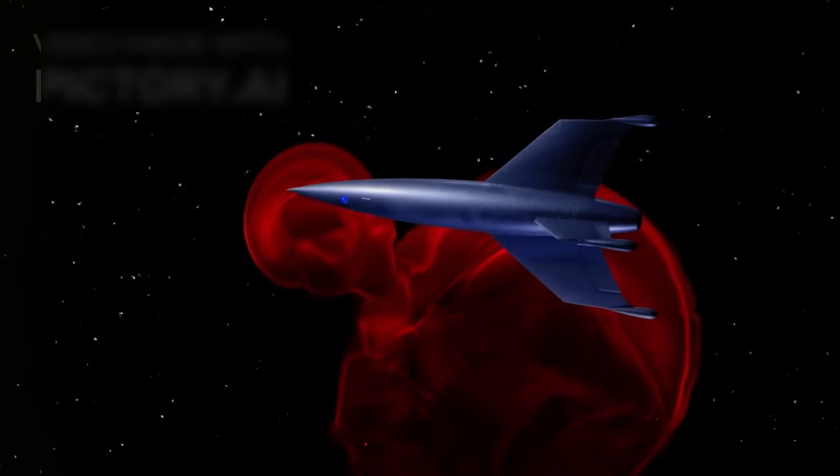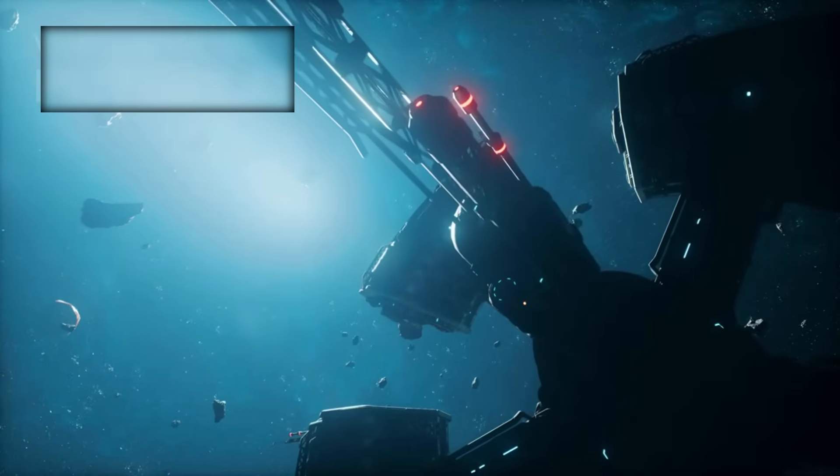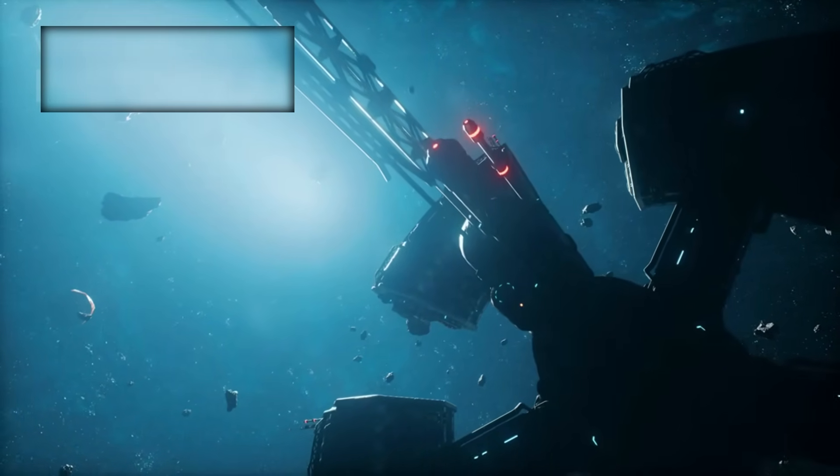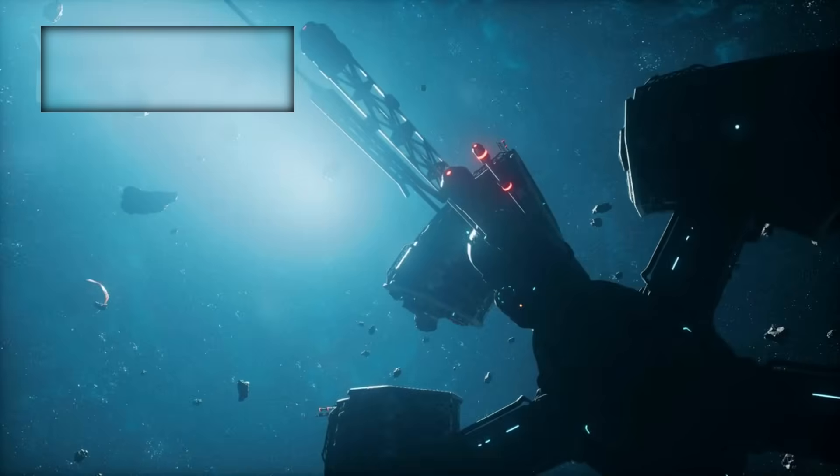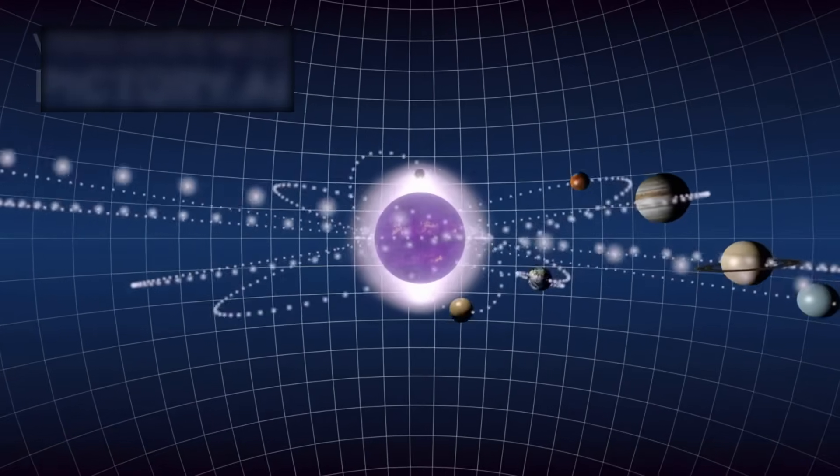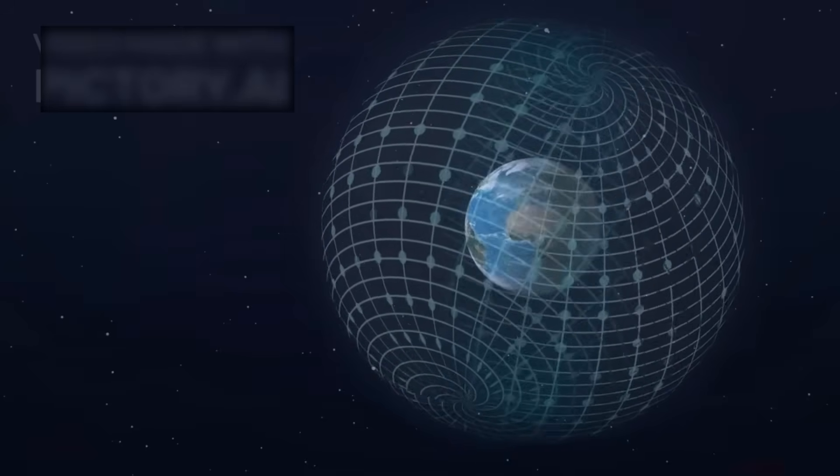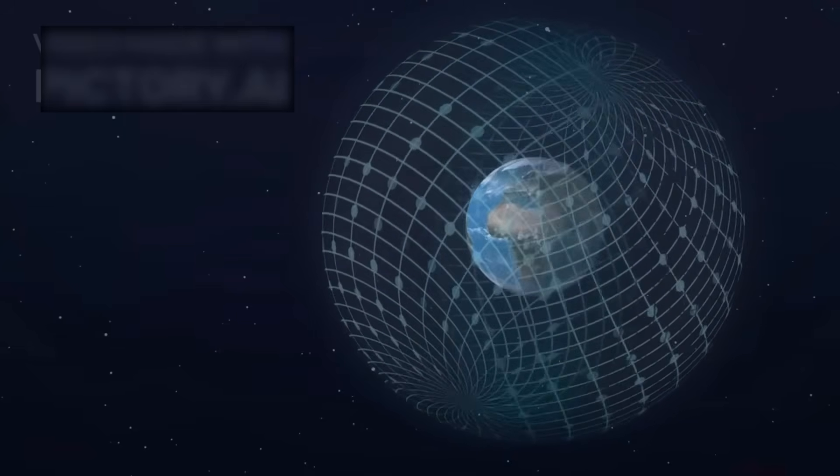Voyager 2 was never expected to last long enough to face these questions. And yet here it is, carrying our voice across a frontier we barely understand, through a region that feels less like a void and more like a storm. It has shown us that our solar system is not drifting aimlessly. It is shielded, protected by a fragile, dynamic boundary.